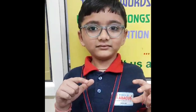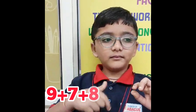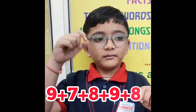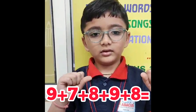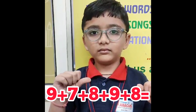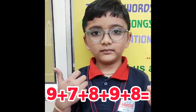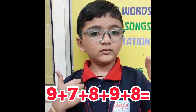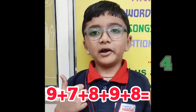1 digit 5 row. 9, 7, 8, 9, 8 — that is 41.